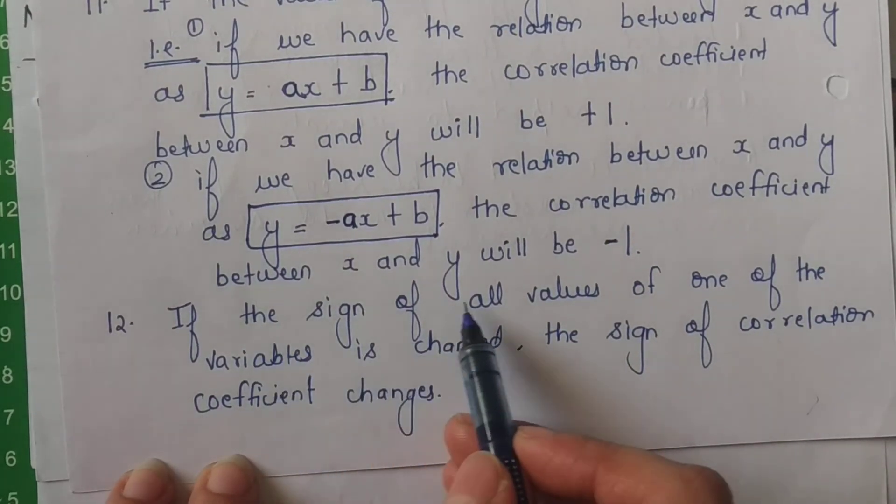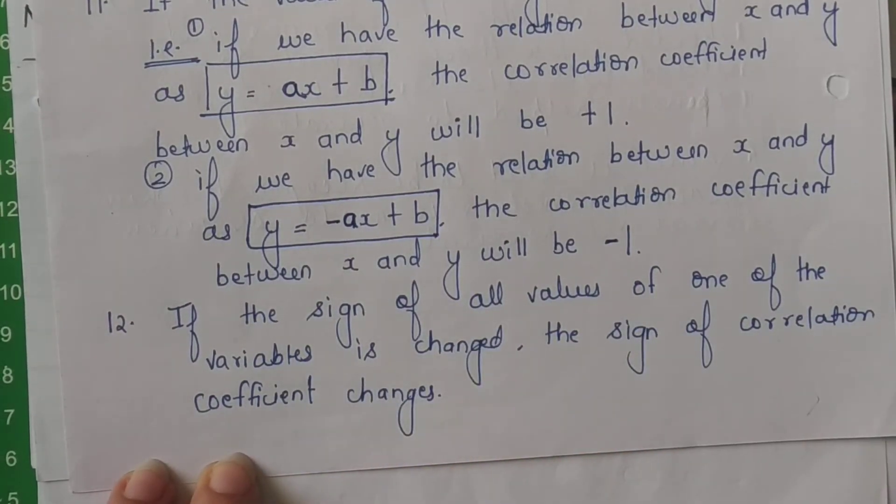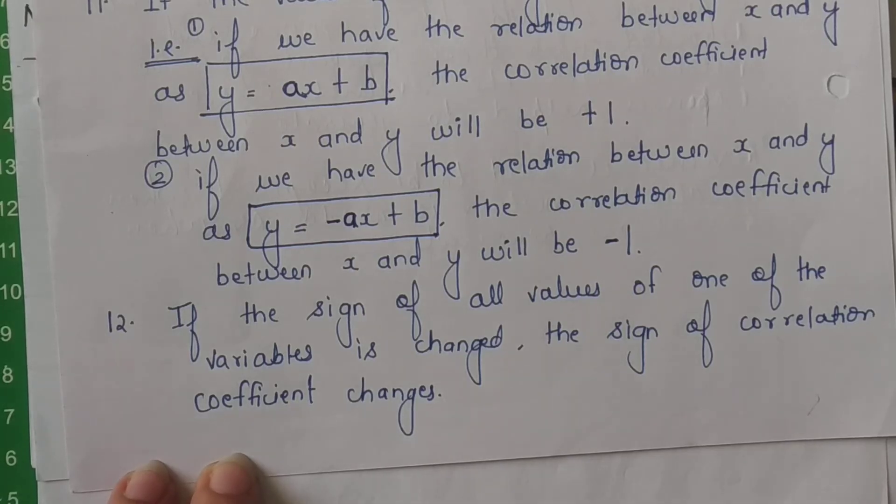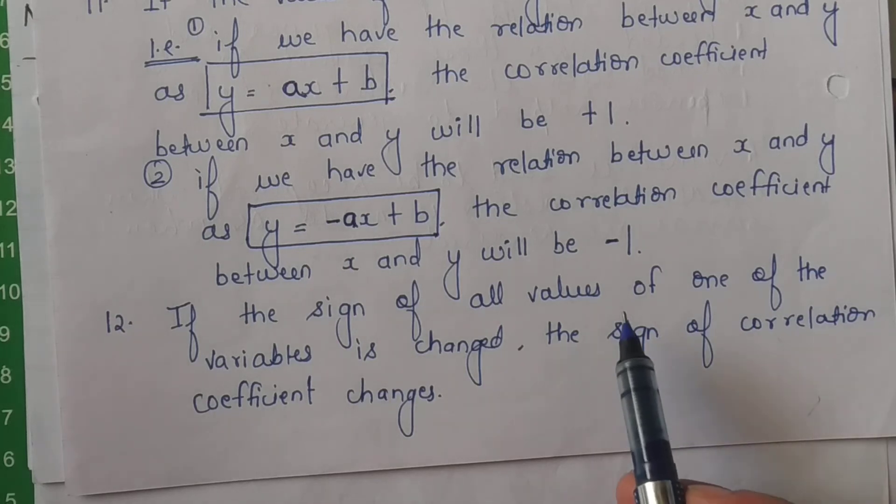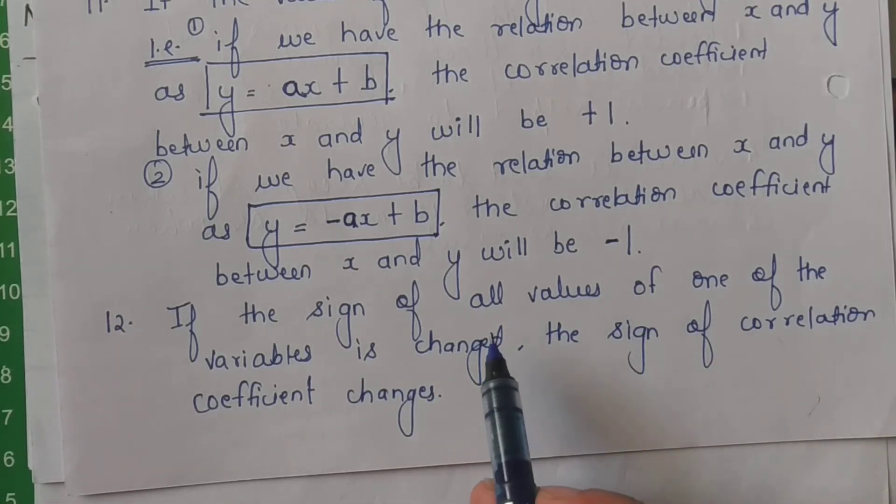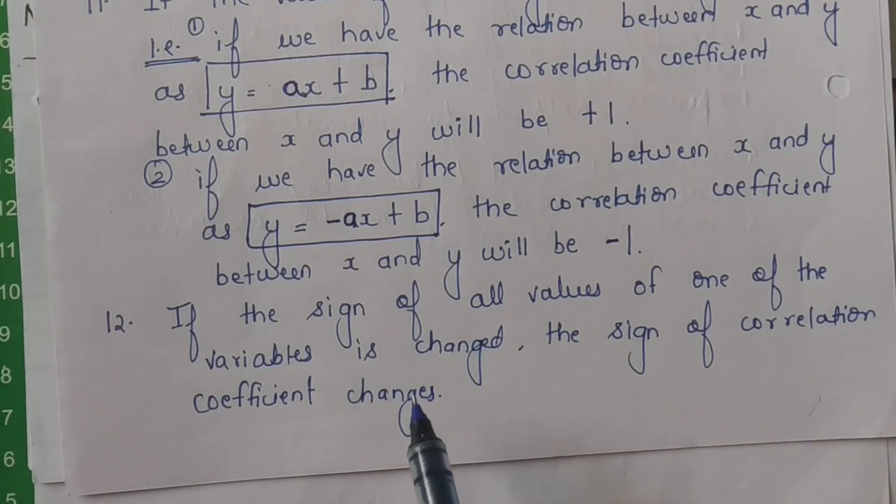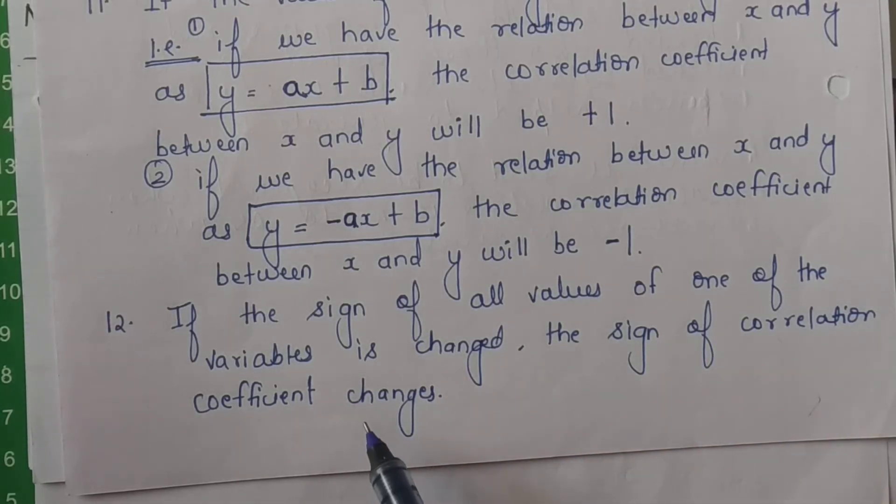Agar hum, if the sign of all the values of one of the variables is changed, the sign of correlation coefficient changes. Agar hum sabhi values ka sign badal dete hain un mein se kisi ek variables ka sign badal dete hain.